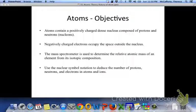This is the atomic theory unit. First, we're going to go over the objectives. Atoms have a positively charged dense nucleus. In that nucleus are protons and neutrons, which are also together called nucleons. Outside of that nucleus is where your negatively charged electrons occupy the space called the electron cloud.